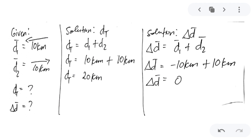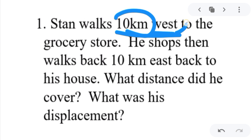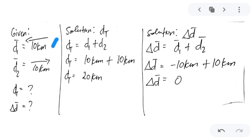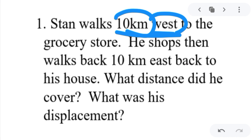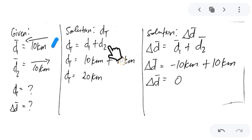Let us proceed with the given values. The first displacement given was 10 km west — this is a displacement because it has magnitude, unit, and direction. The second displacement is 10 km east. We are looking for the total distance and the total displacement. For the total distance, you just add the magnitudes of the displacements, disregarding direction. Total distance equals the first distance plus the second distance: 10 km plus 10 km equals 20 km.